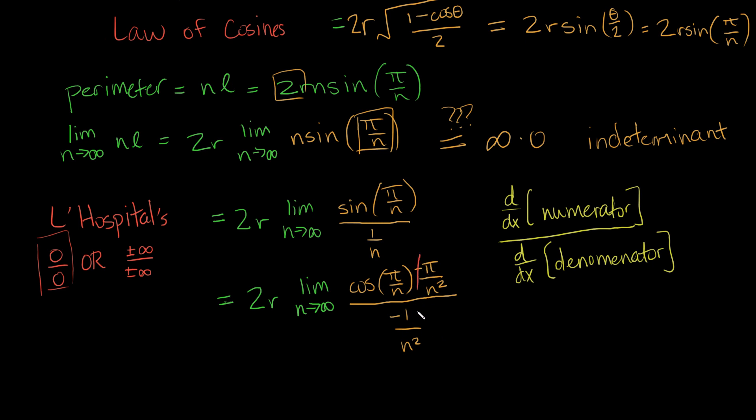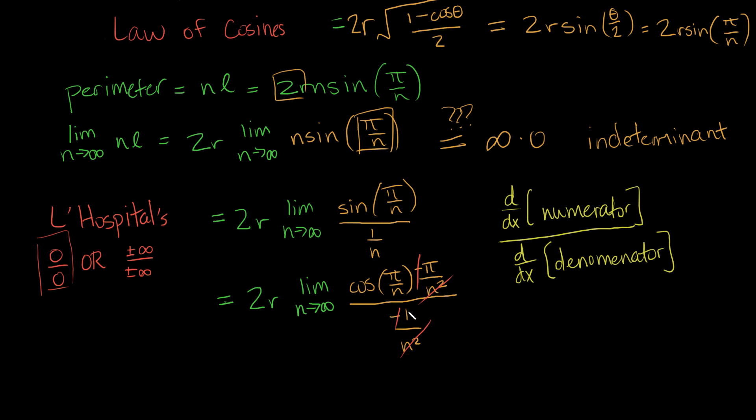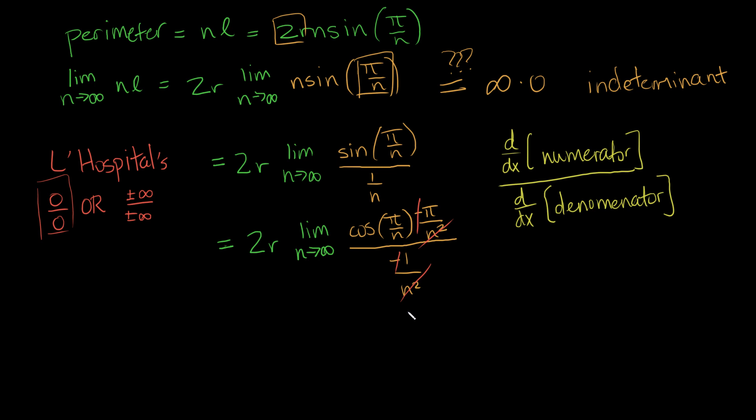Now, these negatives, they're going to cancel out. These n squareds, they're going to cancel out, because this denominator of the denominators is the same as the denominator. So, once we have all that canceling out, what we're left with is 2r times the limit as n goes to infinity of the cosine of π over n times π. What's special about the cosine is that as π over n approaches 0, as n approaches infinity, cosine of 0 equals 1. So we can plug in n equals infinity and get 1.